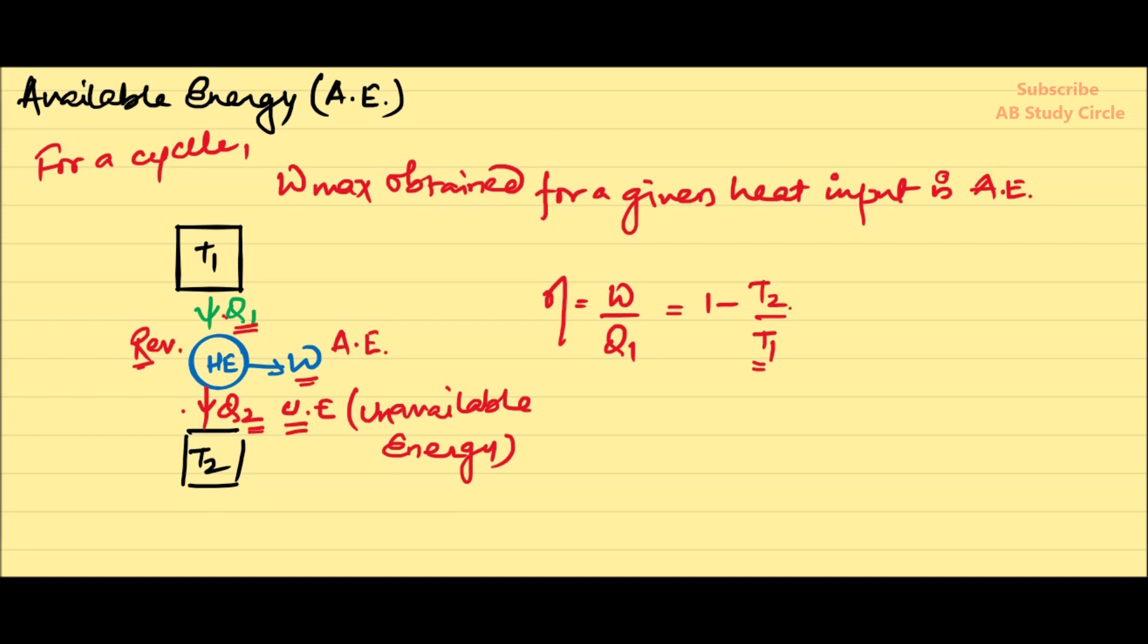And for the maximum efficiency for a given source temperature T1, T2 that is the sink temperature should be at the lowest possible temperature. The lowest possible temperature for maximum efficiency is when the heat rejected Q2 is directly transferred to the surrounding, because the surrounding is at temperature T0, which is lower than T2. So, let us replace the sink with surrounding T0. Now, this reversible heat engine is operating between T1, the source temperature, and T0, the surrounding temperature.